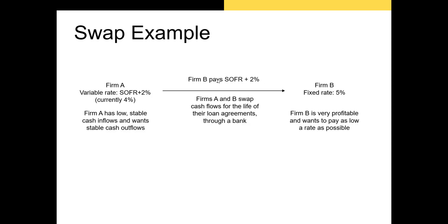In the swap, firm A will agree to pick up firm B's interest expense and firm B will agree to pick up firm A's interest expense. So firm B will pay SOFR plus 2% — firm A's original contract terms — and firm A will pay 5% of the face value of firm B's contract. One important thing to note: they're not actually paying off the individual creditors directly. The reason you go through a bank is because the entire transaction takes place through the bank. If one party is paying more than the other in a given period, that party will compensate the other through the bank, and the party paying less will receive that compensation.